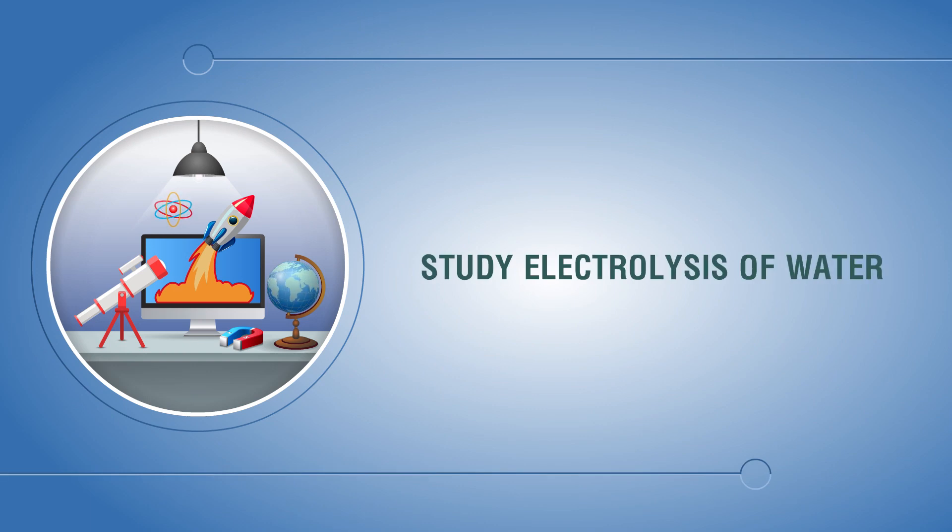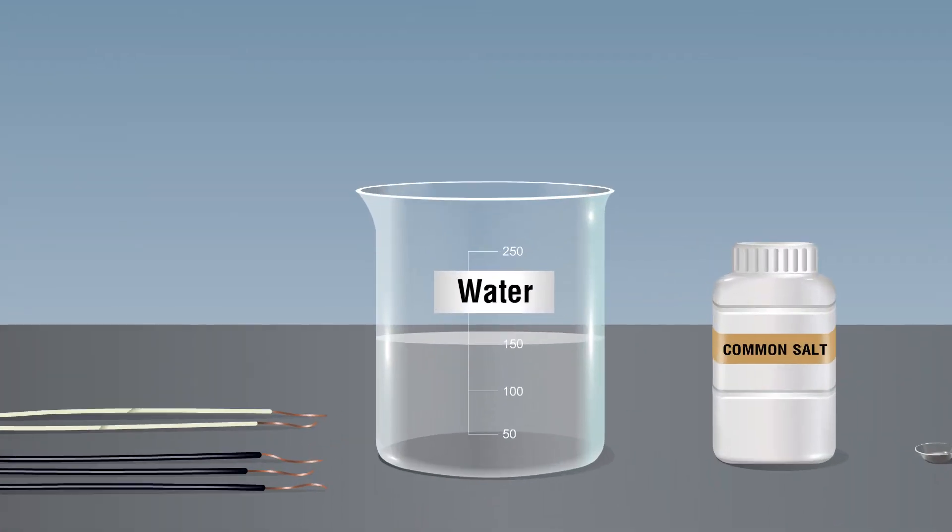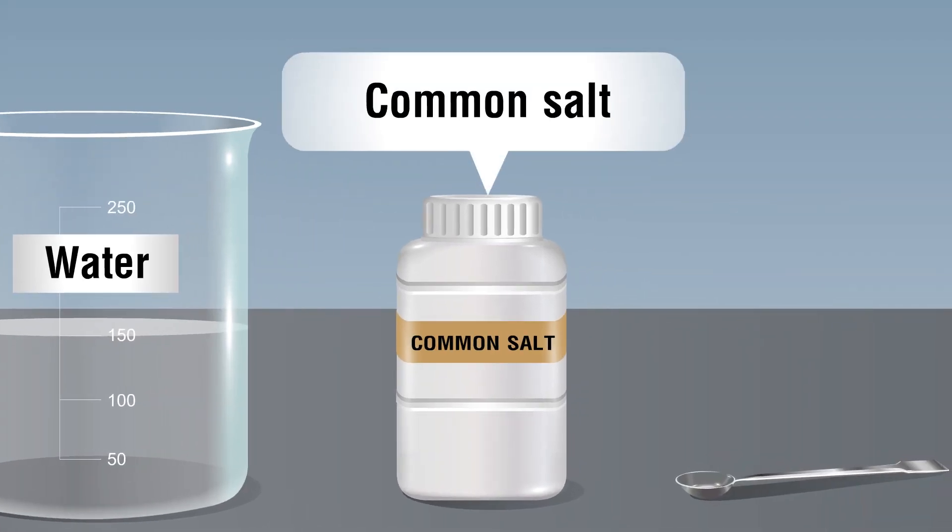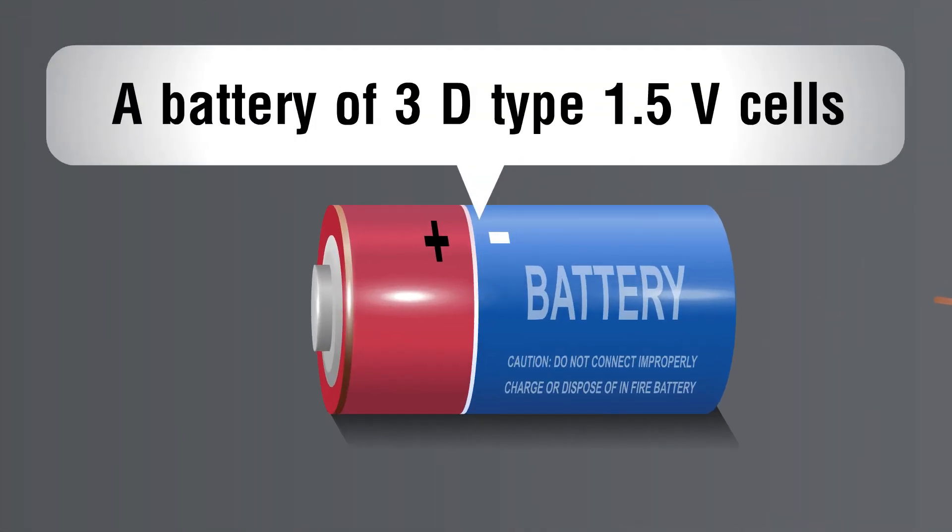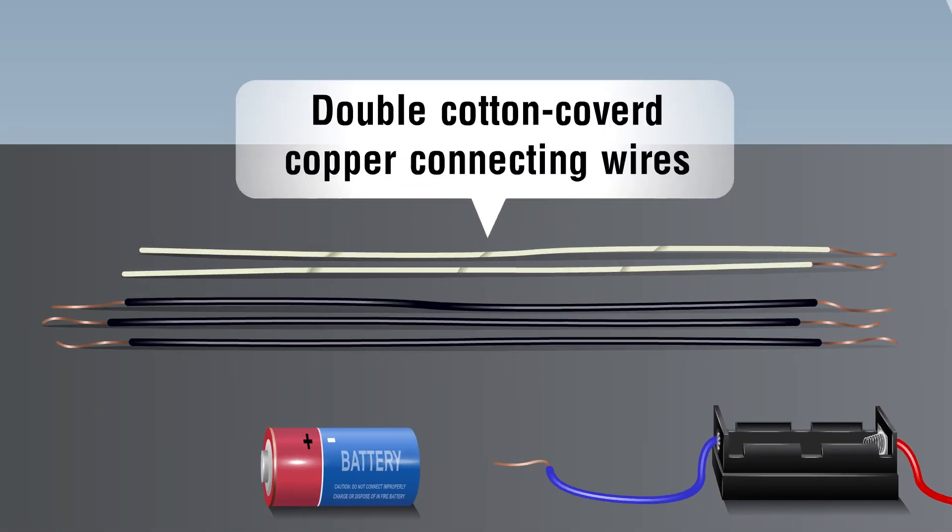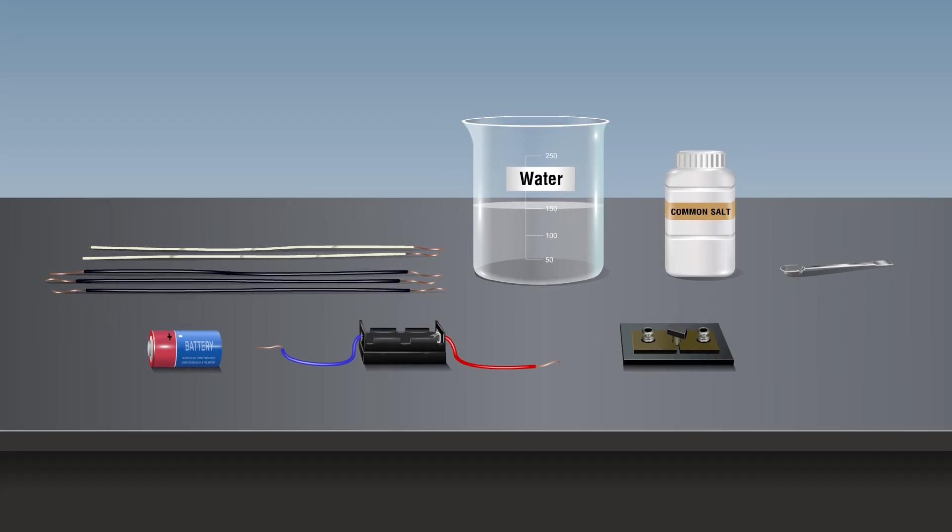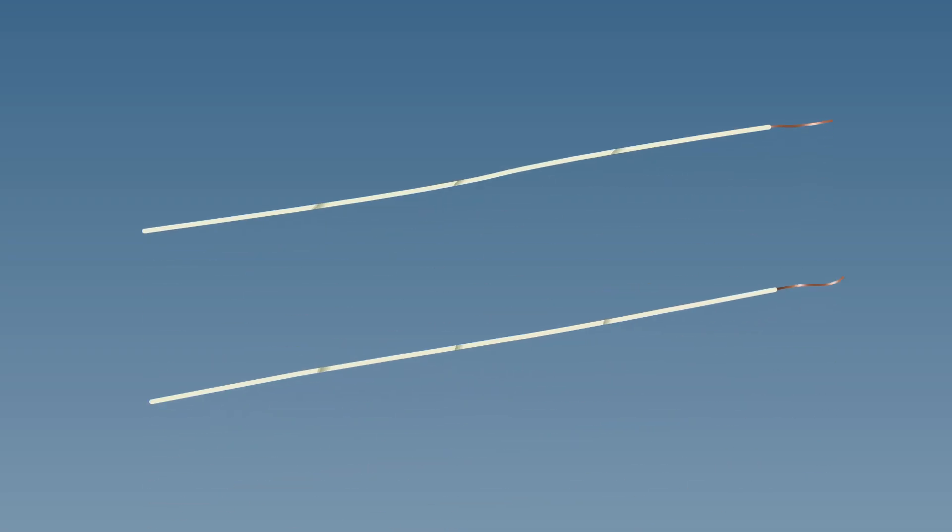Study electrolysis of water. Materials required: water in a 250 ml beaker, common salt, spatula, a battery of three 1.5 volt cells, cell holder, double cotton covered copper connecting wires, and a switch. Procedure: Take two long double cotton covered copper wires.